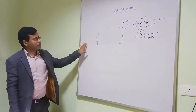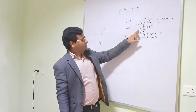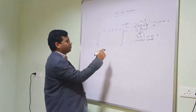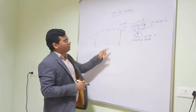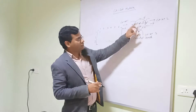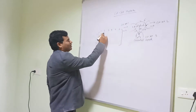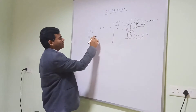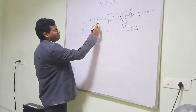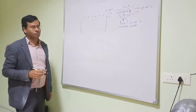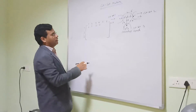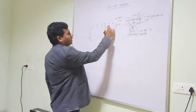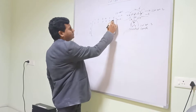In cut set 1, the arrow direction matches the cut direction, so that is plus 1. Similarly, the cut direction and the branch direction for branch 2 are the same, so we write plus 1. Branch 3 is not related to this cut, so this is 0. Branch 4 is also not related, so 0. Branch 5 is also 0. Branch 6 is going to the outside, so that is plus 1.